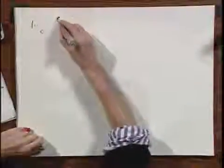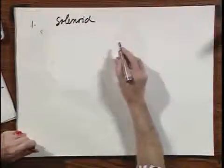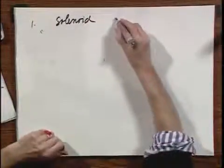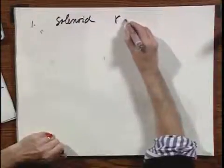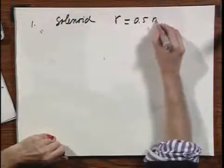Problem number one is a huge solenoid, one that is used for nuclear magnetic resonance. It has a cross-sectional radius, circular radius, 0.5 meters.